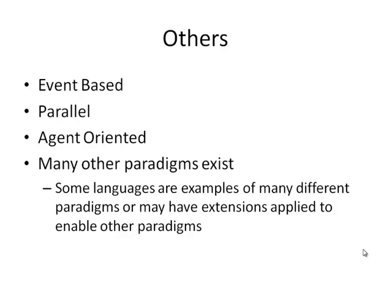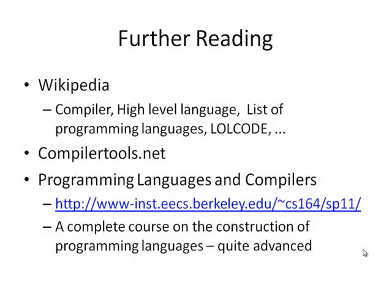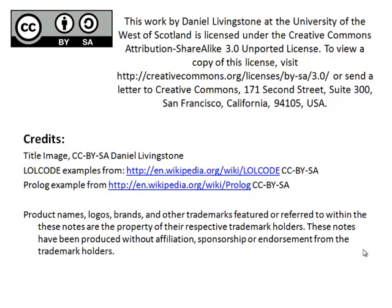There's a range of other ways to distinguish or characterize programming languages, generally falling under categories such as event-based programming, parallel programming — programming that allows multiple things to happen at the same time — agent-oriented, and a whole range of other programming paradigms. For further reading, there are online courses available with video lectures on programming languages, compilers, and developing programming languages and compilers. Compilertools.net was mentioned, and as usual there's lots on Wikipedia. That's all for now — thank you.